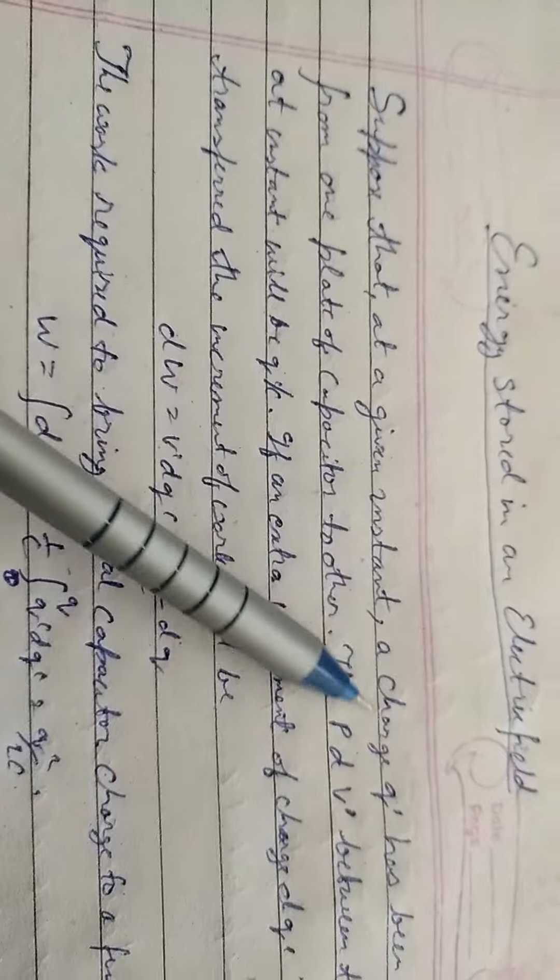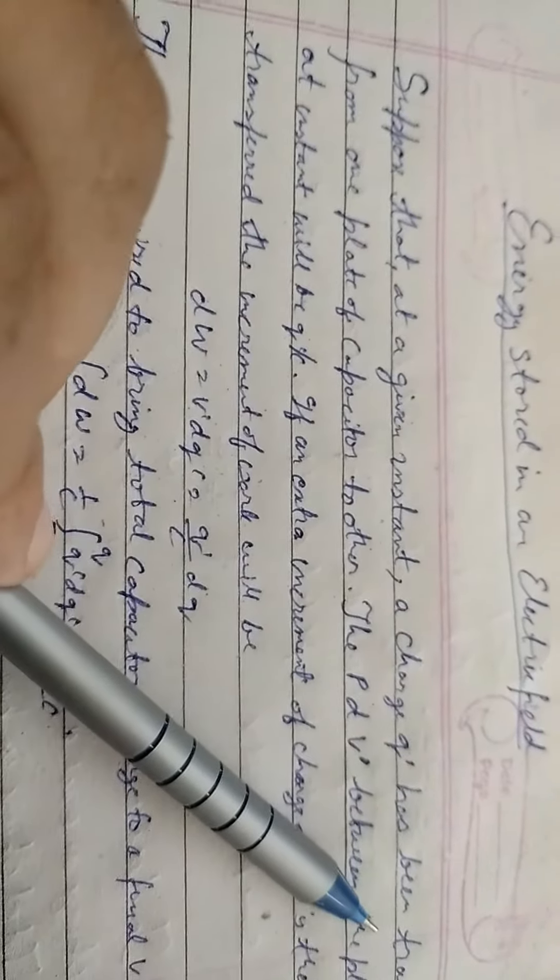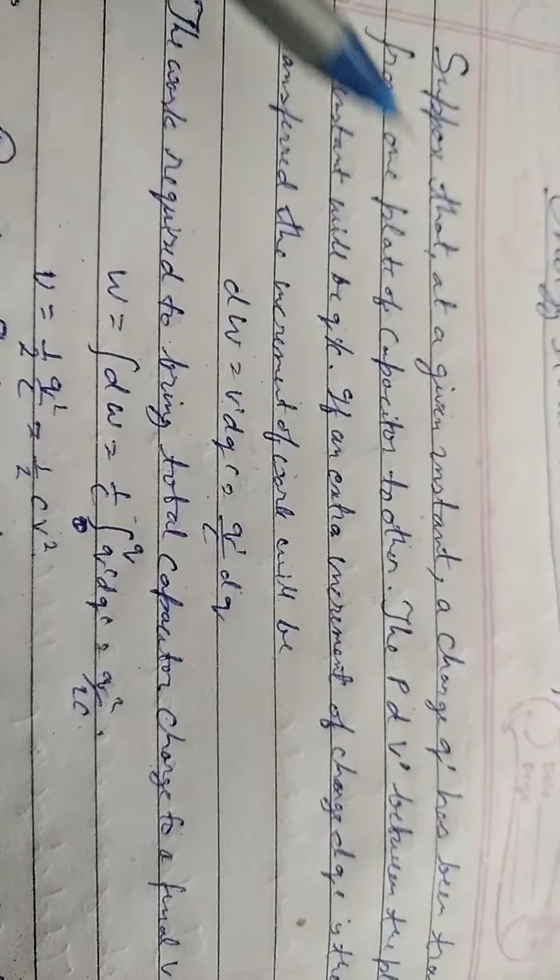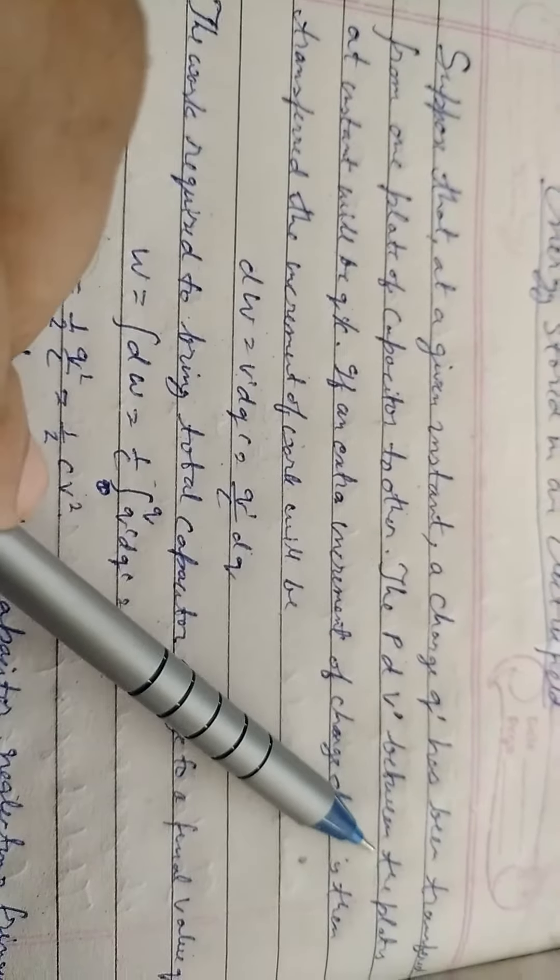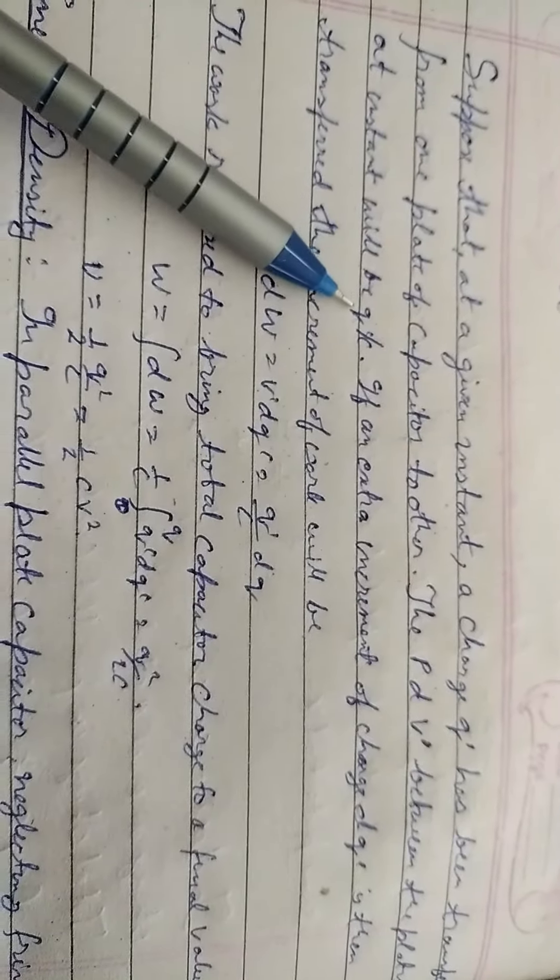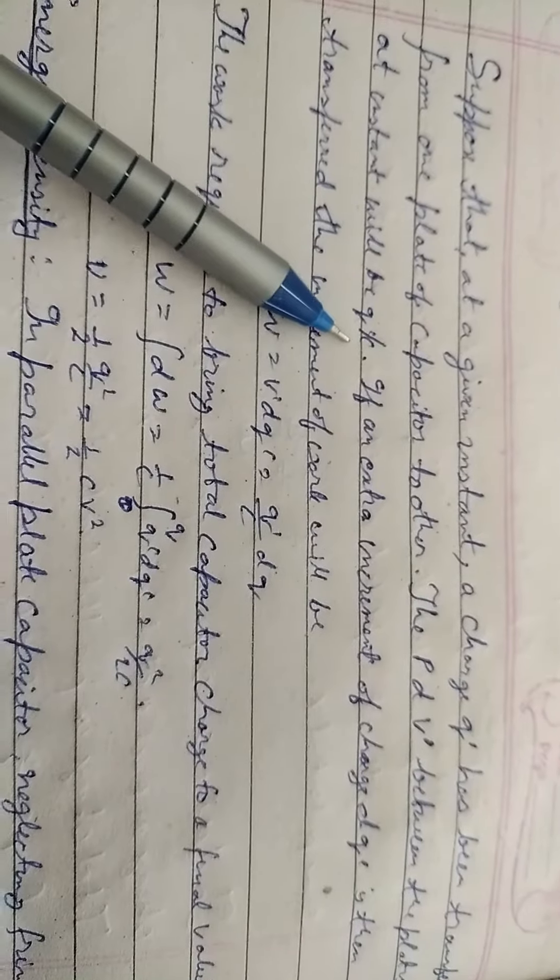Suppose that at a given instant a charge Q' has been transferred from one plate of a capacitor to the other. The potential difference V' between the plates at that instant will be Q' by C.